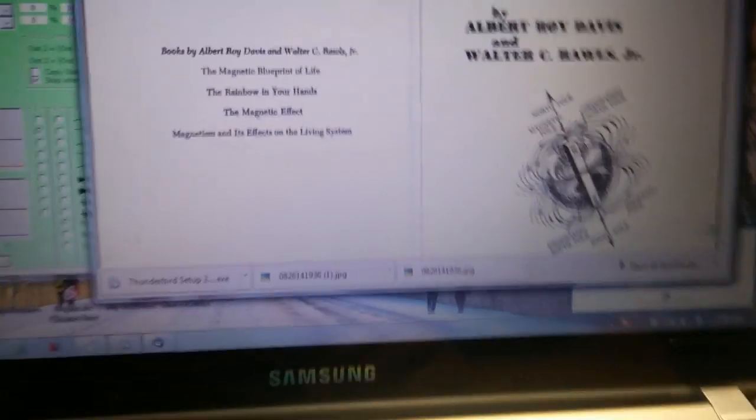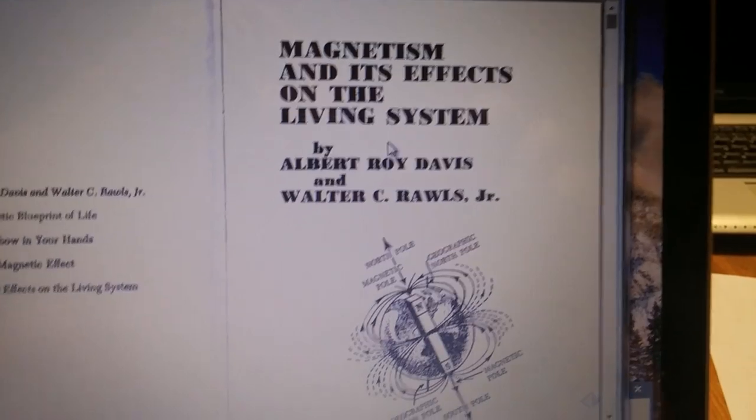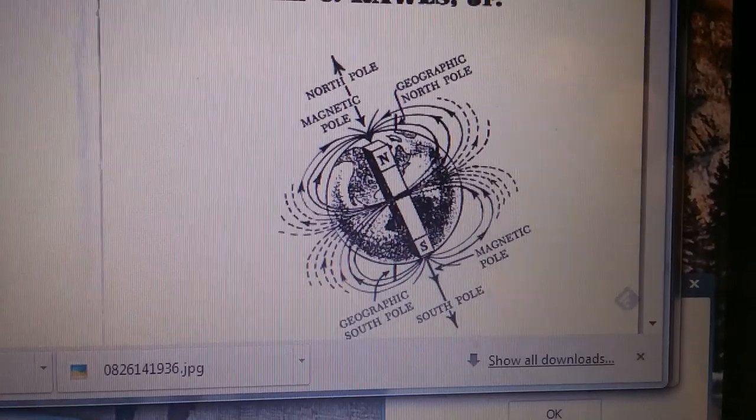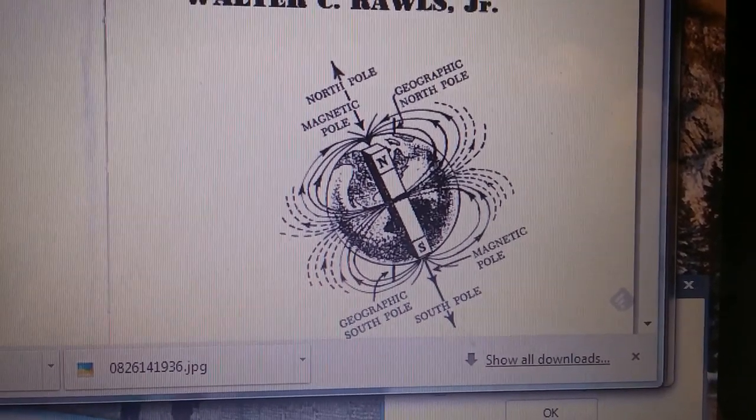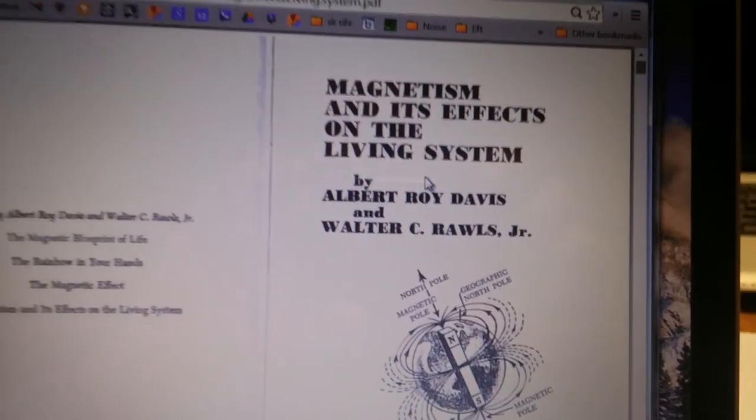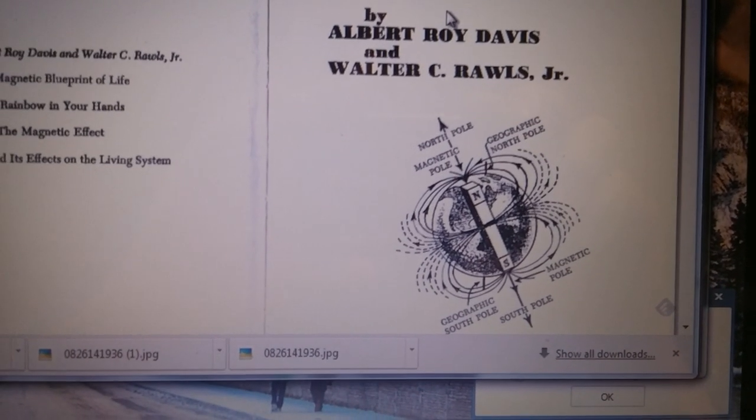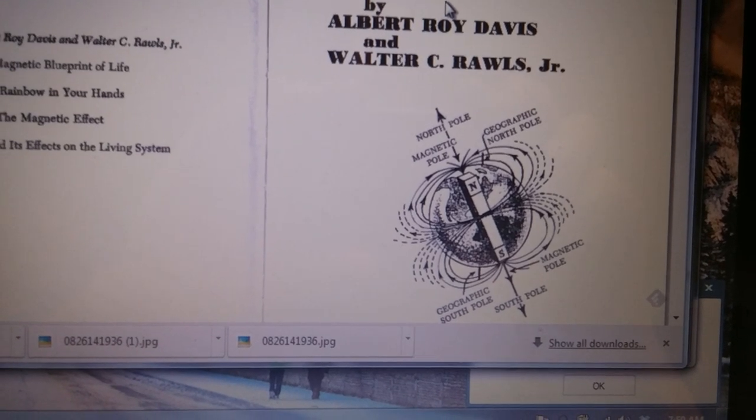If I go to the original research by Albert Roy Davis and Walter Rawls, you see as an example the North Pole of the earth is what they are considering in their work on magnetism and its effects on living systems. They're considering the North Pole, the magnetic North Pole, to be the healing side.